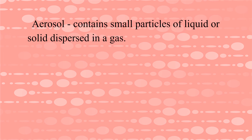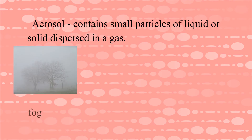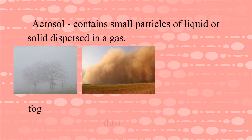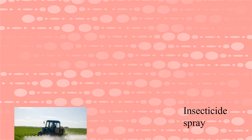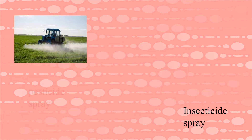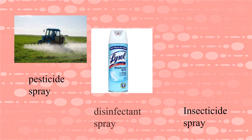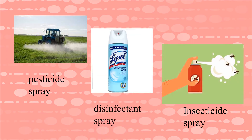The next type is an aerosol. It contains small particles of liquid or solid dispersed in a gas. Examples are fog, dust, and smoke. Here are other examples of an aerosol: pesticide spray, disinfectant spray, and insecticide spray.